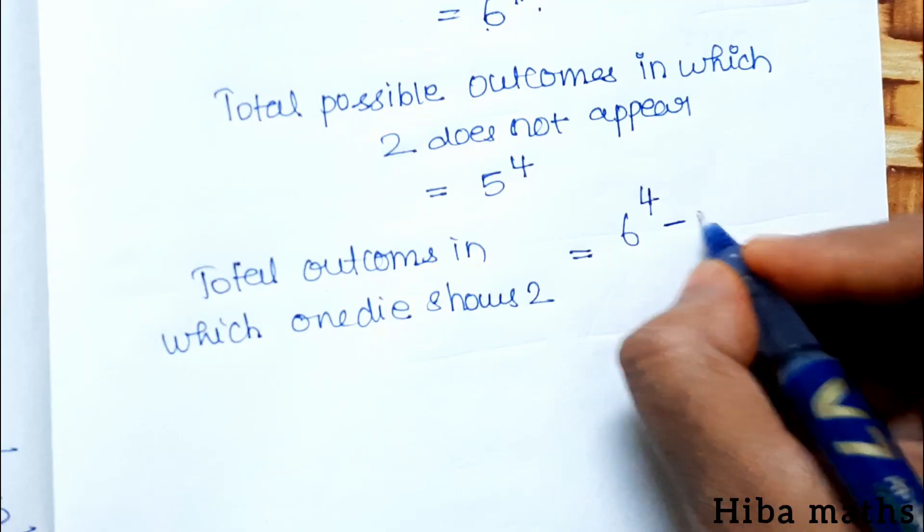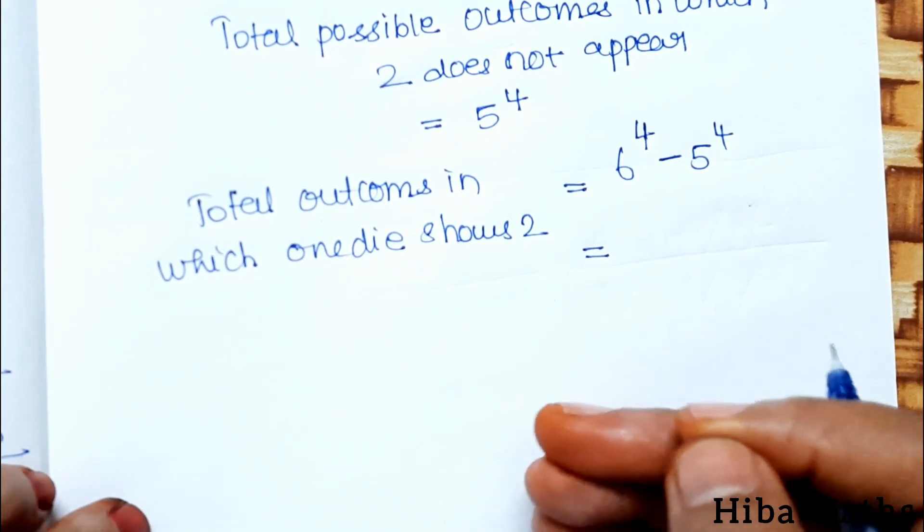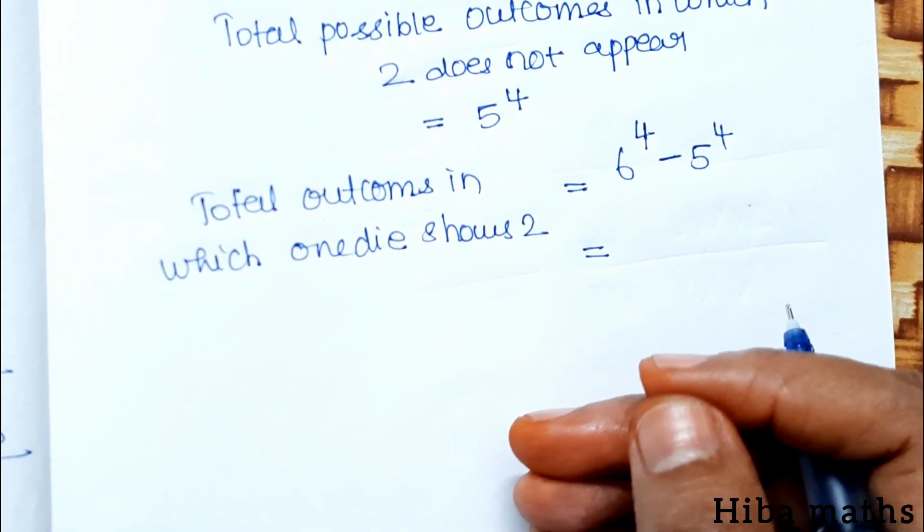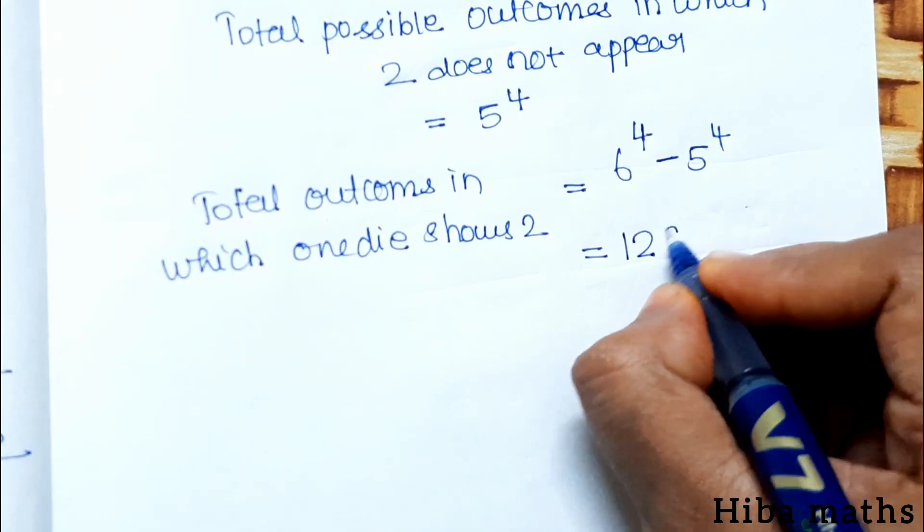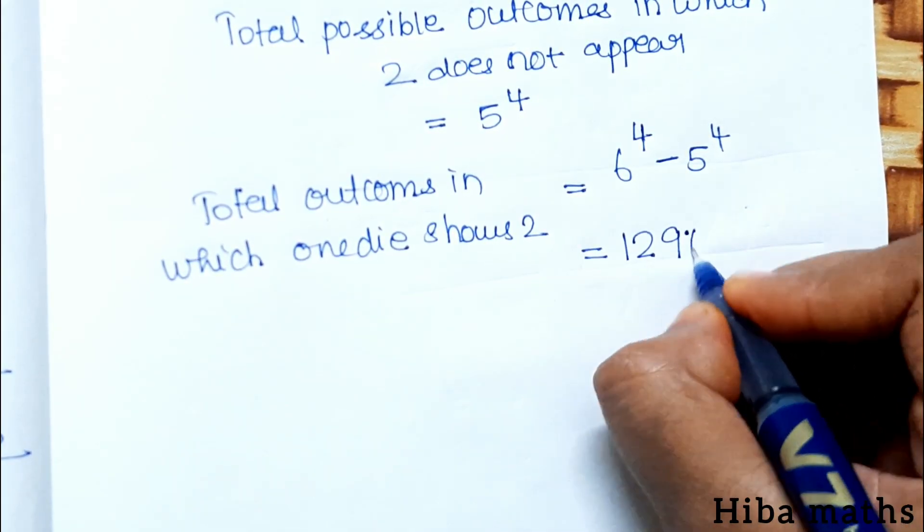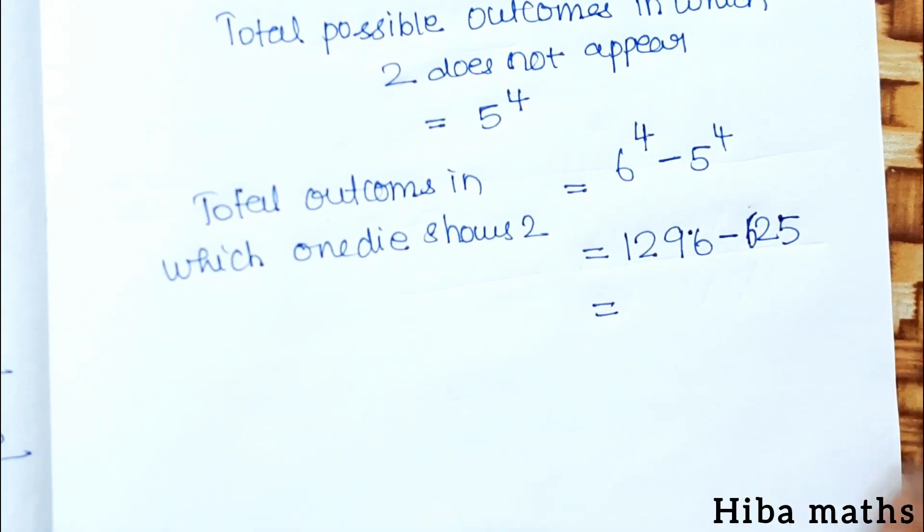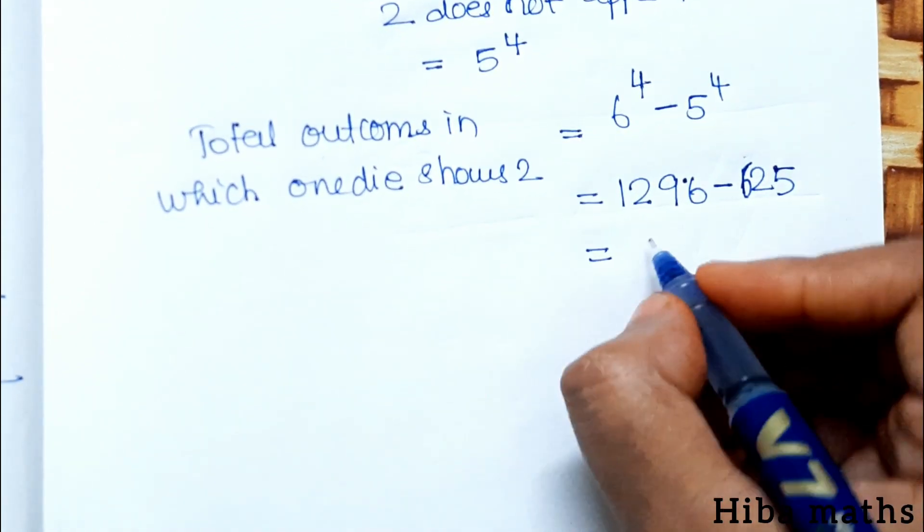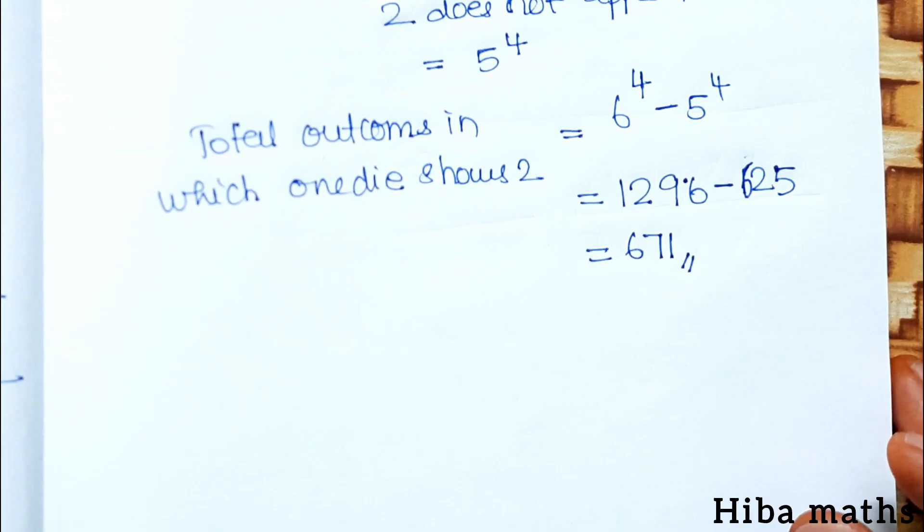Now 6 to the power 4 equals 1296. 5 to the power 4 equals 625. So 1296 minus 625 equals 671. This is our result. The sum is easy to try. Thank you so much for watching.